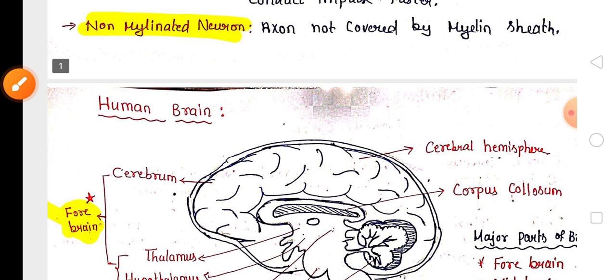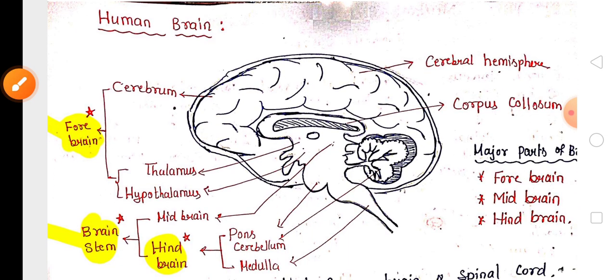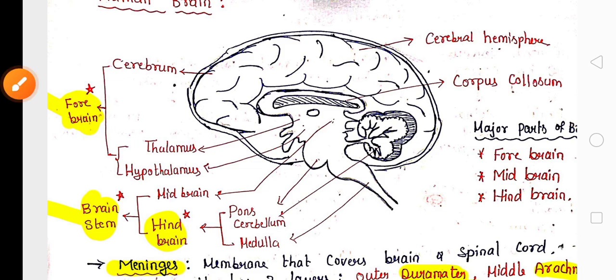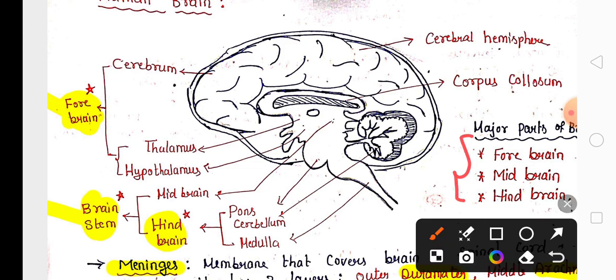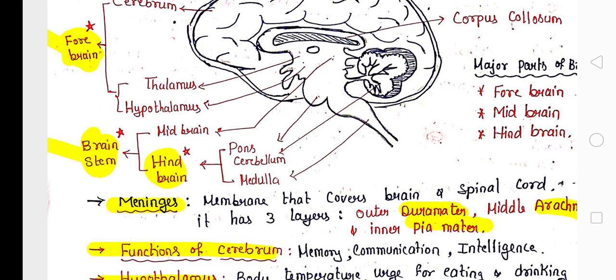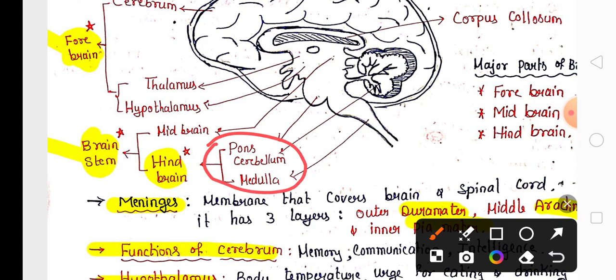Practice and learn the diagram of the human brain. Human brain has three main parts: Forebrain, Midbrain, and Hindbrain. Forebrain consists of Cerebrum, Thalamus, and Hypothalamus. Hindbrain is made up of Pons, Cerebellum, and Medulla Oblongata. Midbrain and Hindbrain together are called the Brain Stem.